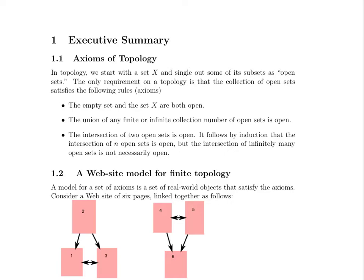We start with a set X, and we single out some of its subsets. We define them as open sets. And the only requirement on a topology is that the collection of open sets follows these rules. The first is that the empty set and the set X itself are both open, whatever open may mean. And we'll talk about the definition of open in a moment. And also, the union of any finite or infinite collection of open sets is also open.